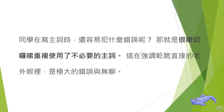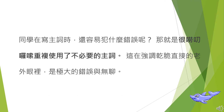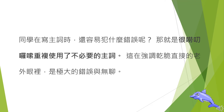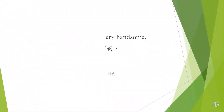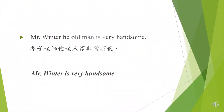同學在寫主詞的時候還容易犯什麼錯誤呢？除了剛才造成一個子句出現兩個主要動詞的情況外，就是很囉嗦，重複使用不必要的主詞。這在強調乾脆直接的老外眼裡是一個極大的錯誤。例如：Mr. Winter, he, old man, is very handsome。